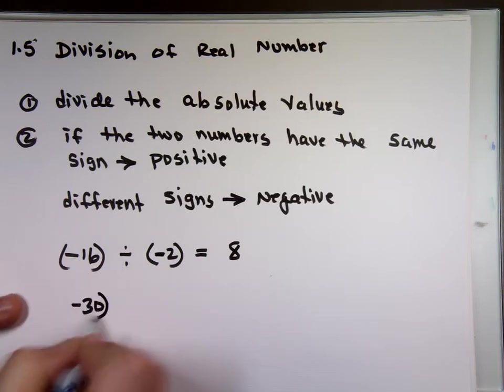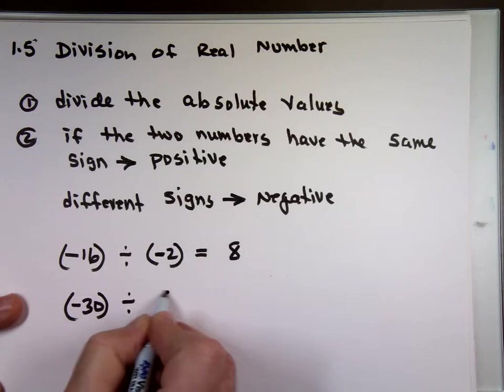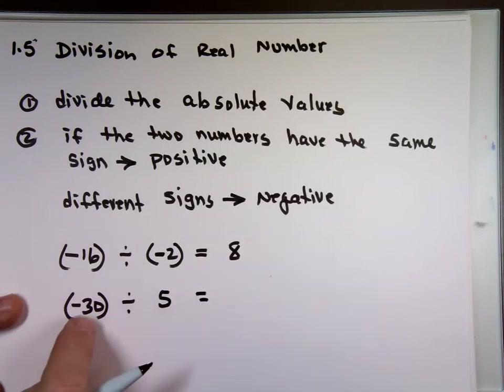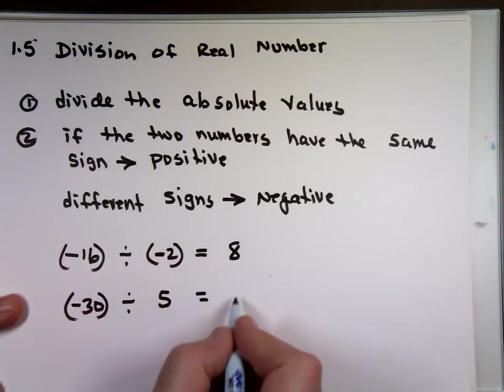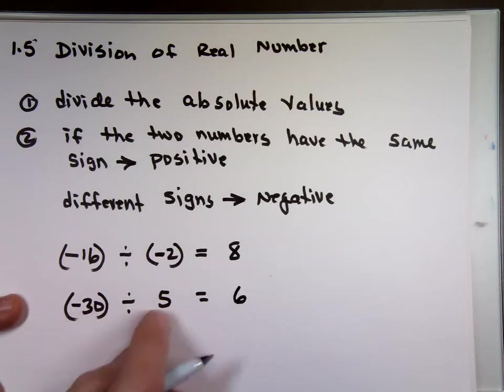Negative 30 divided by five. Divide the absolute values. What's 30 divided by five? Six. Do they have different signs or the same sign? Different. The result is negative.